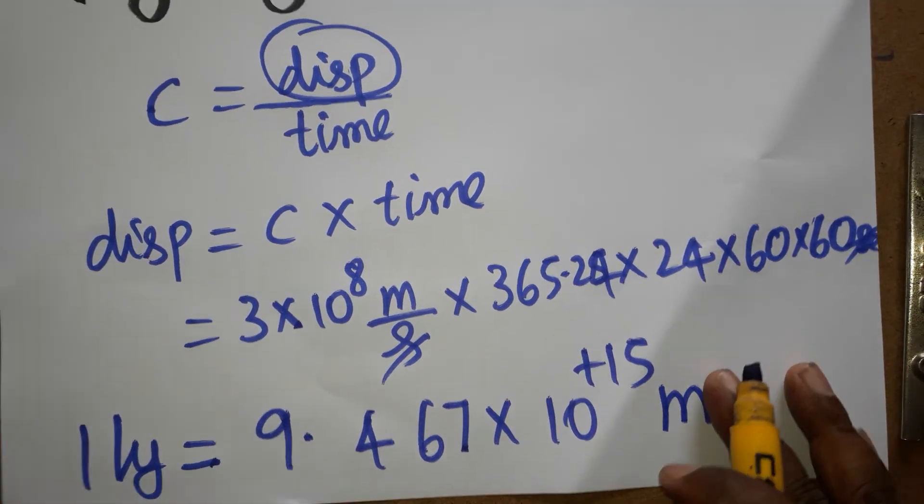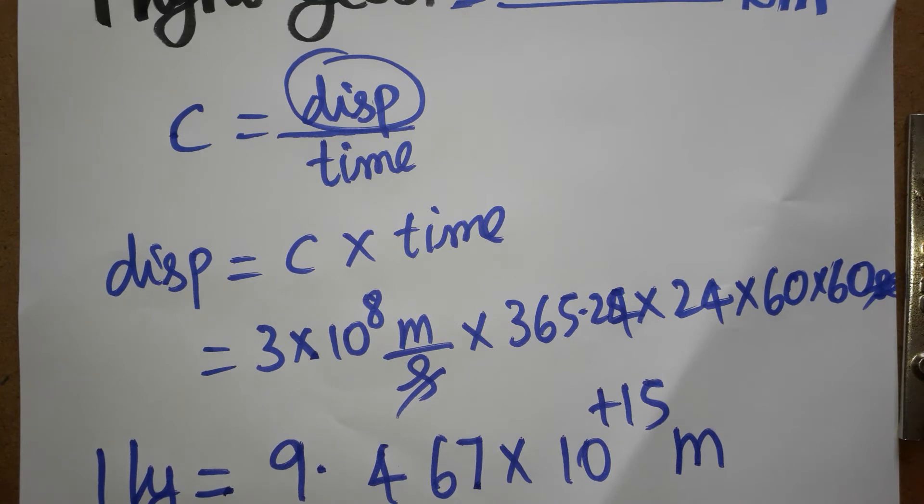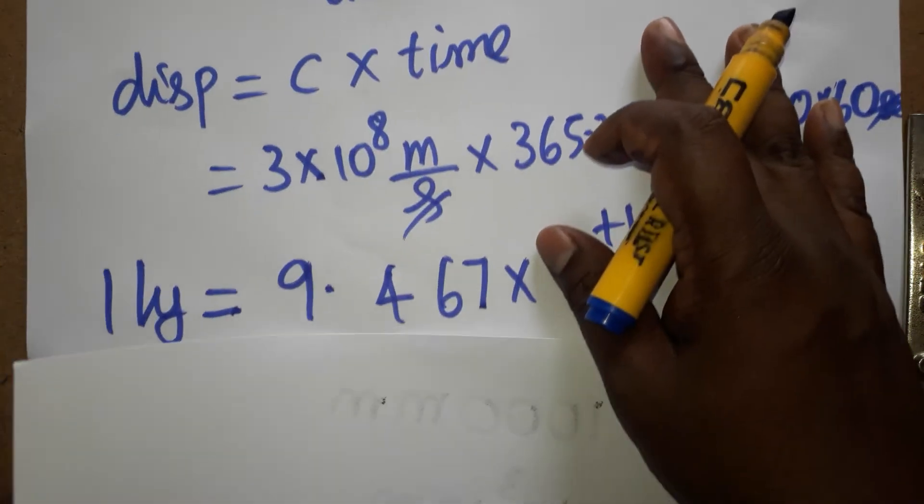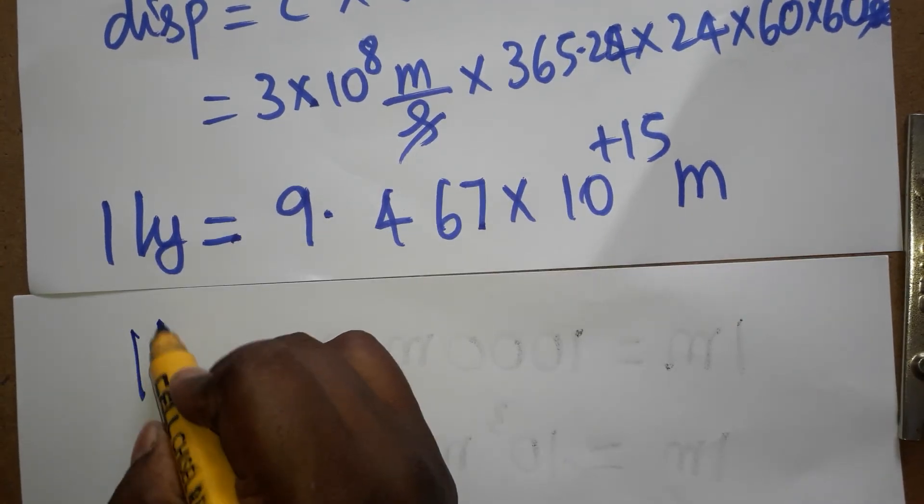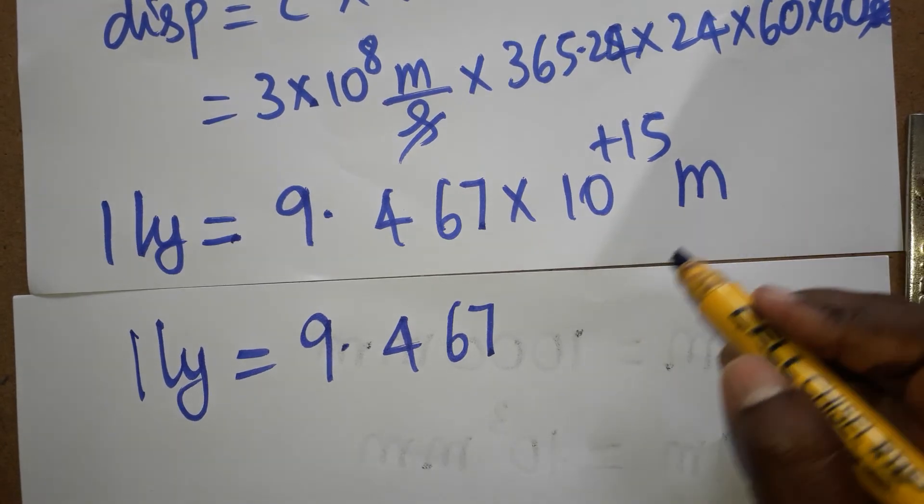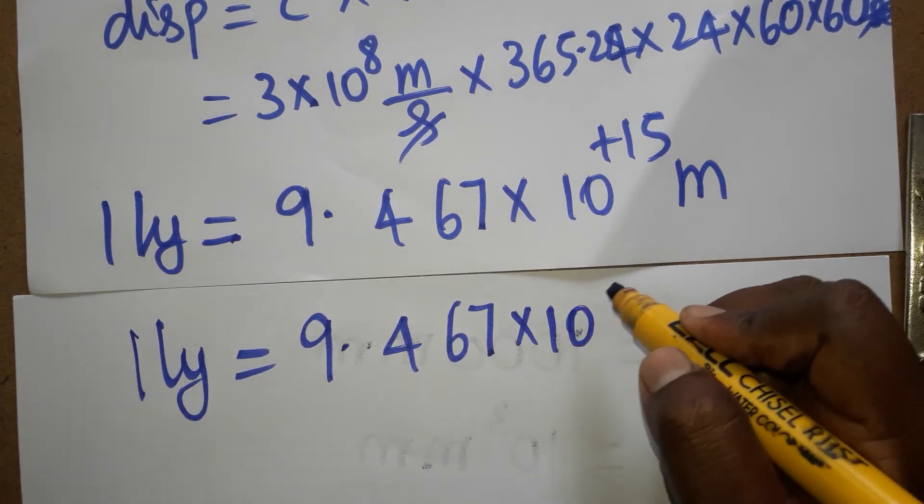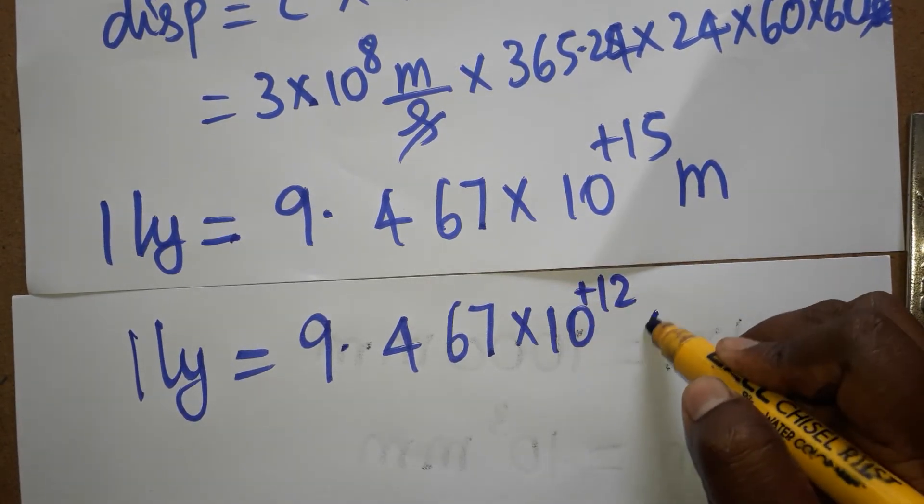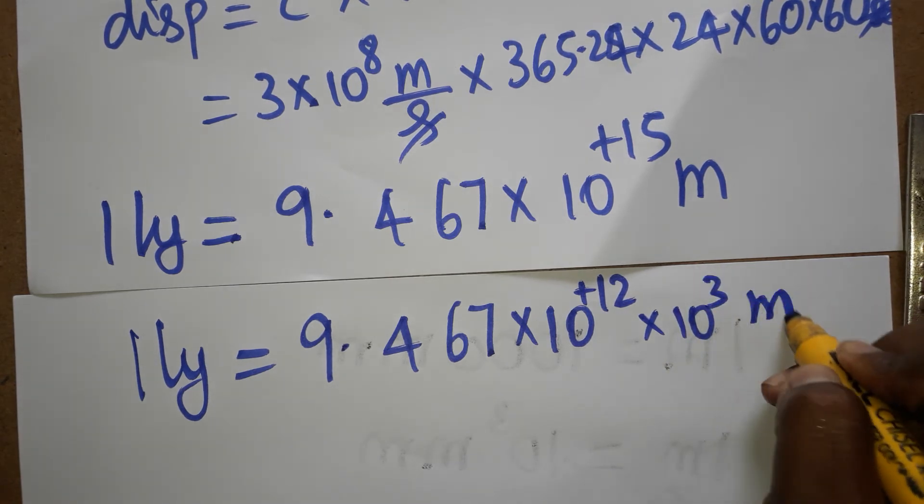So one light year is this many meters. Now our question is one light year is equal to dash kilometer. So one light year we got as 9.467 into 10 power 15 meters. That time writing is 10 power 12 plus 10 power 3 meter.